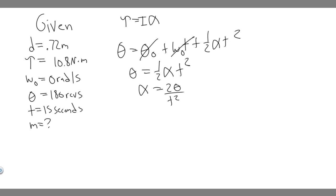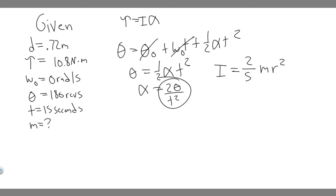Now let's solve for inertia. There are different equations depending on the object. For a solid sphere rotating about an axis through its center, the equation is I equals two-fifths times m times r-squared. This is the moment of inertia formula for this specific situation — check your textbook for other shapes.